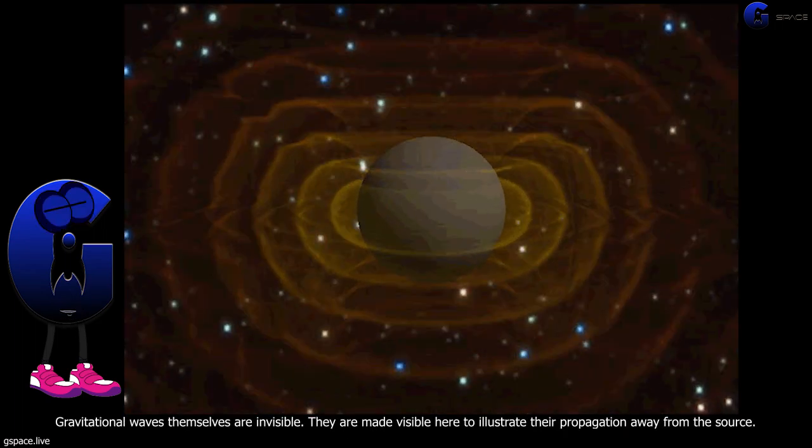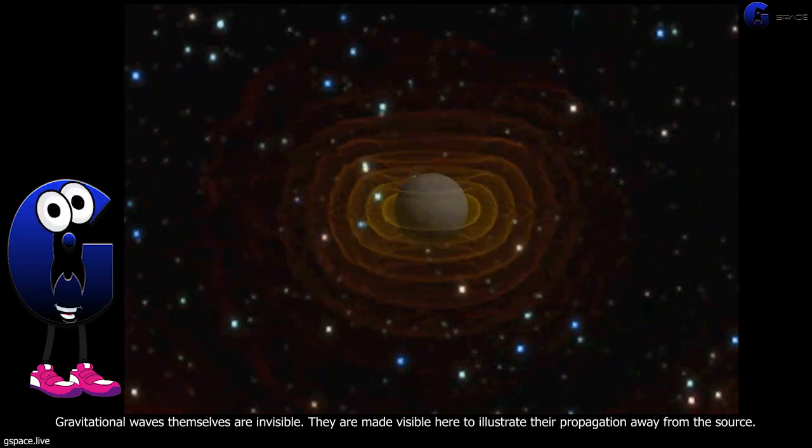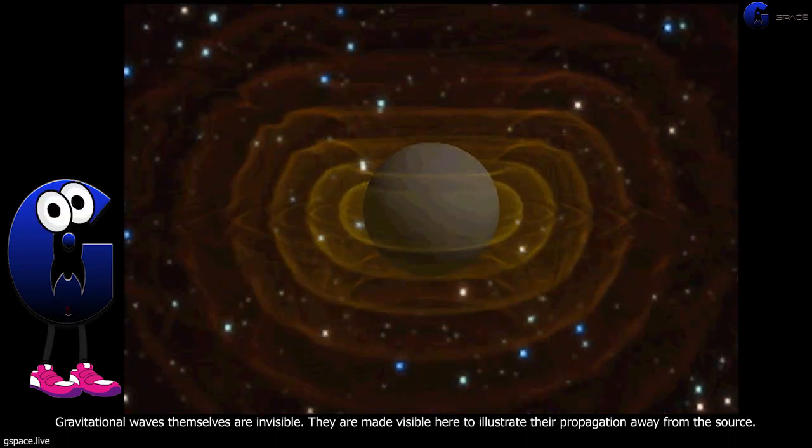Gravitational waves themselves are invisible. They are made visible here to illustrate their propagation away from the source.